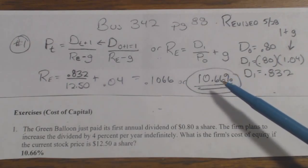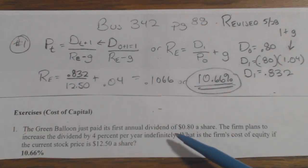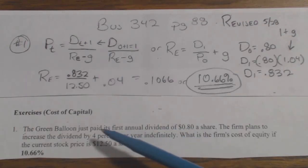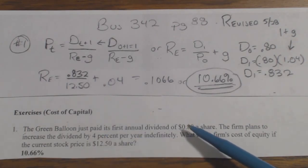I made a bunch of bonehead mistakes. I was putting D1 as this number, which is D0, because it says just paid, that means it's been paid. So the next one is D1 for period 1.